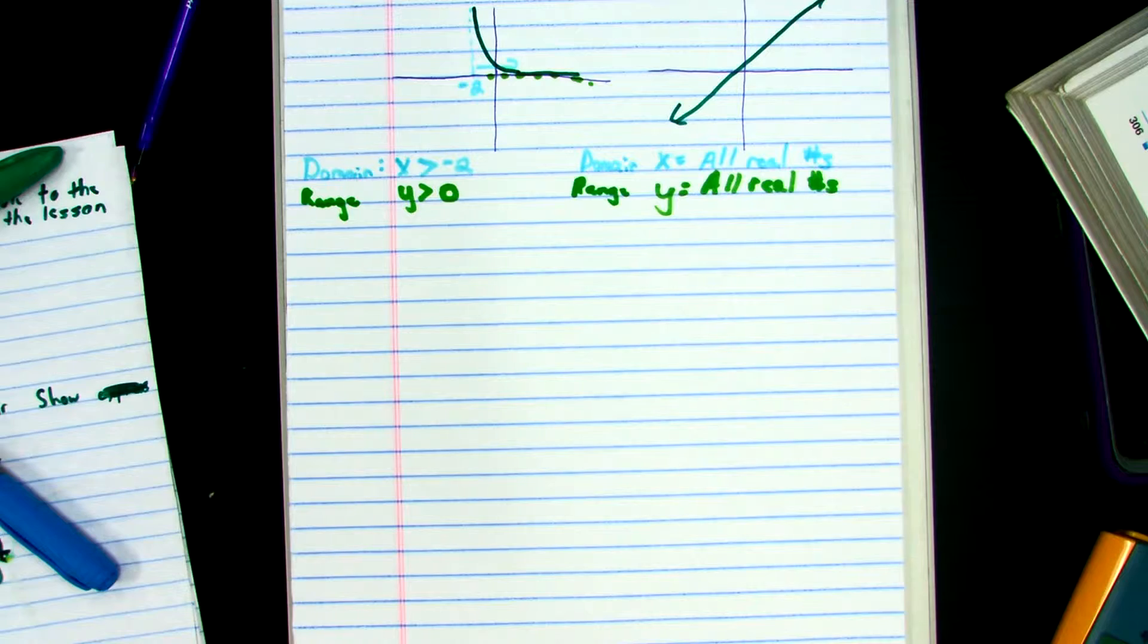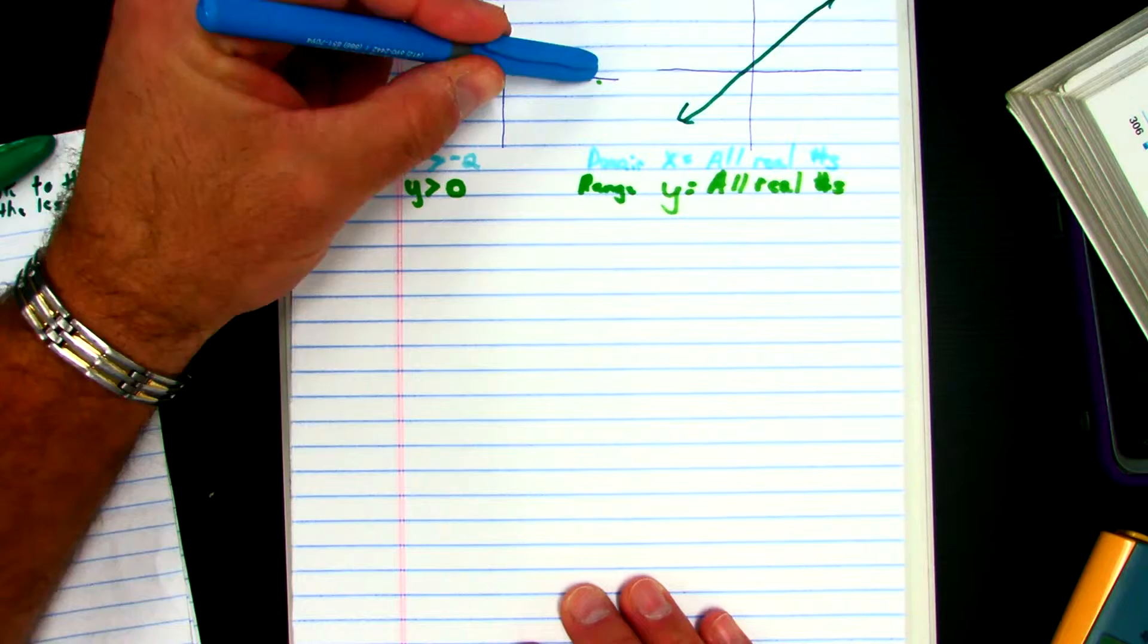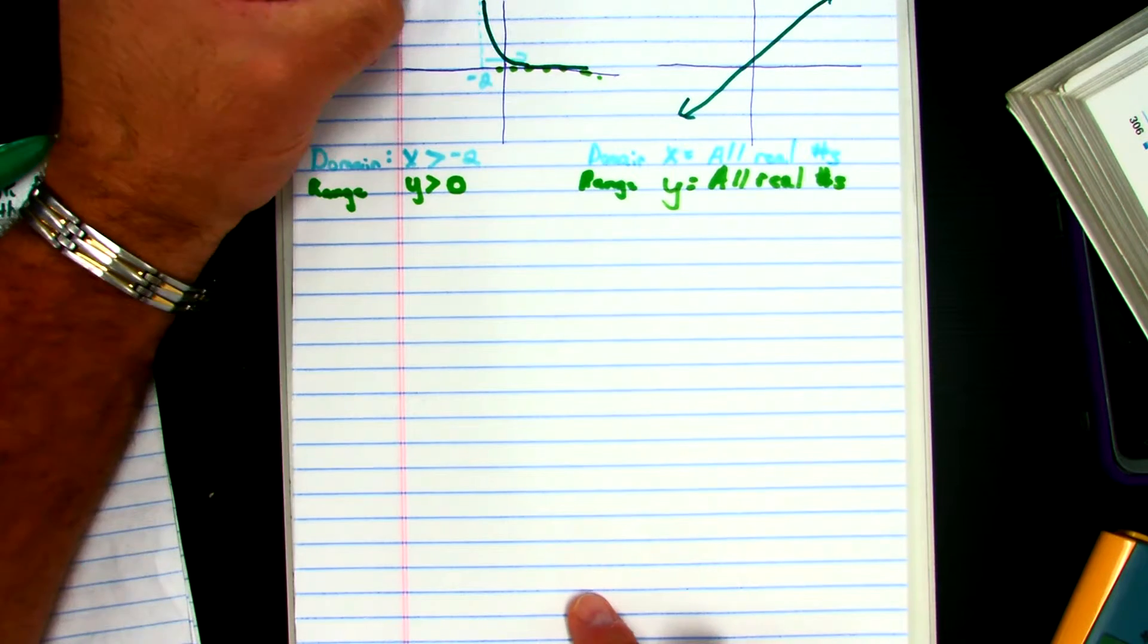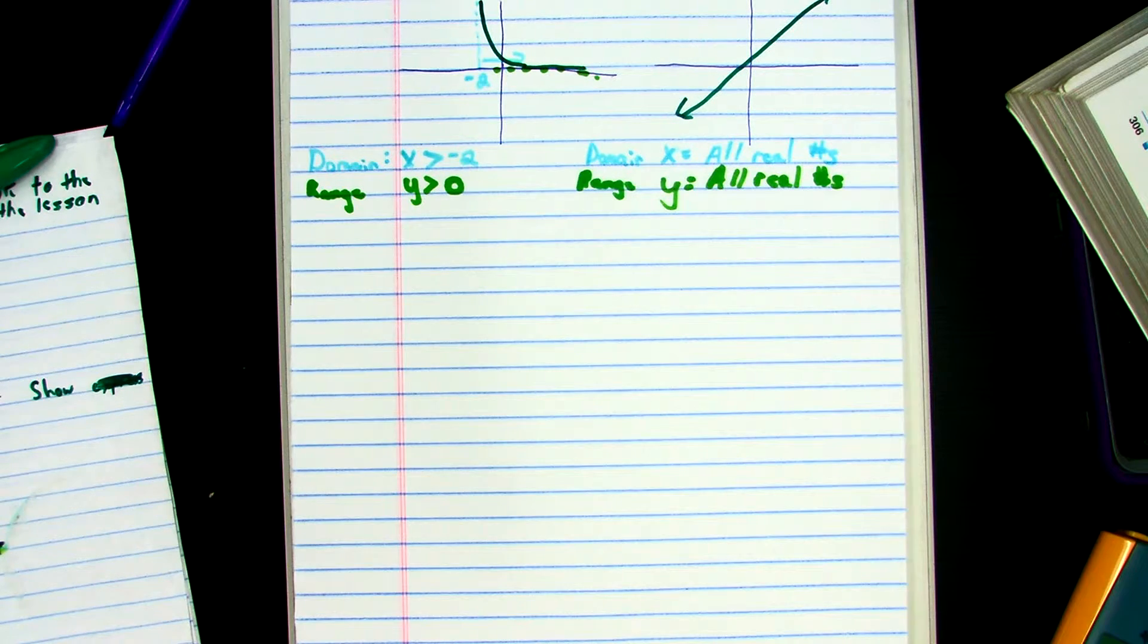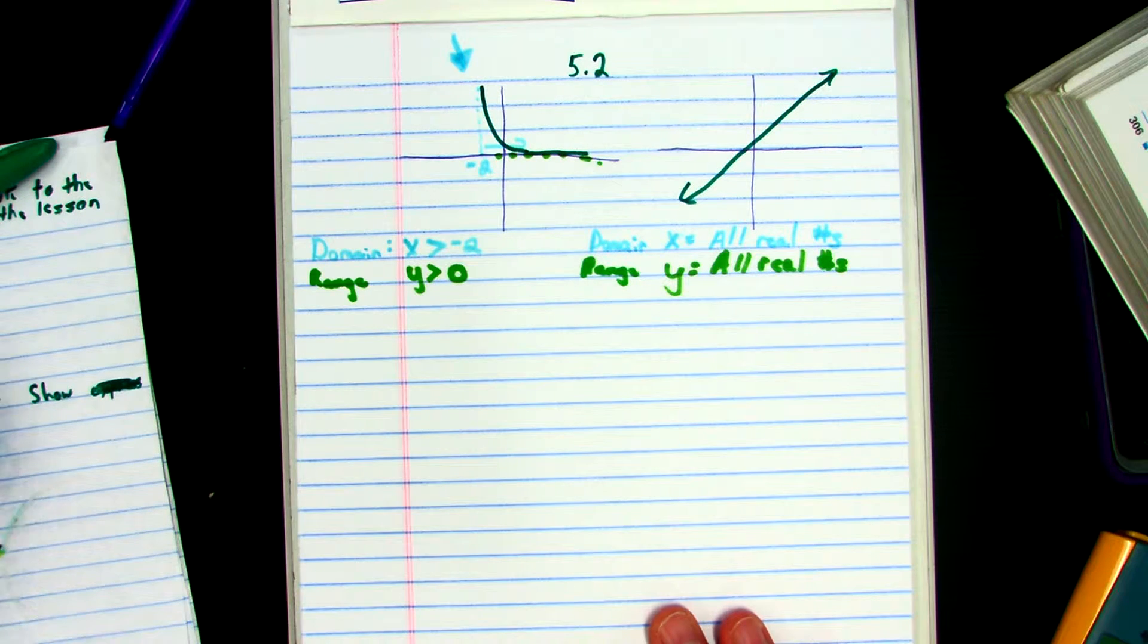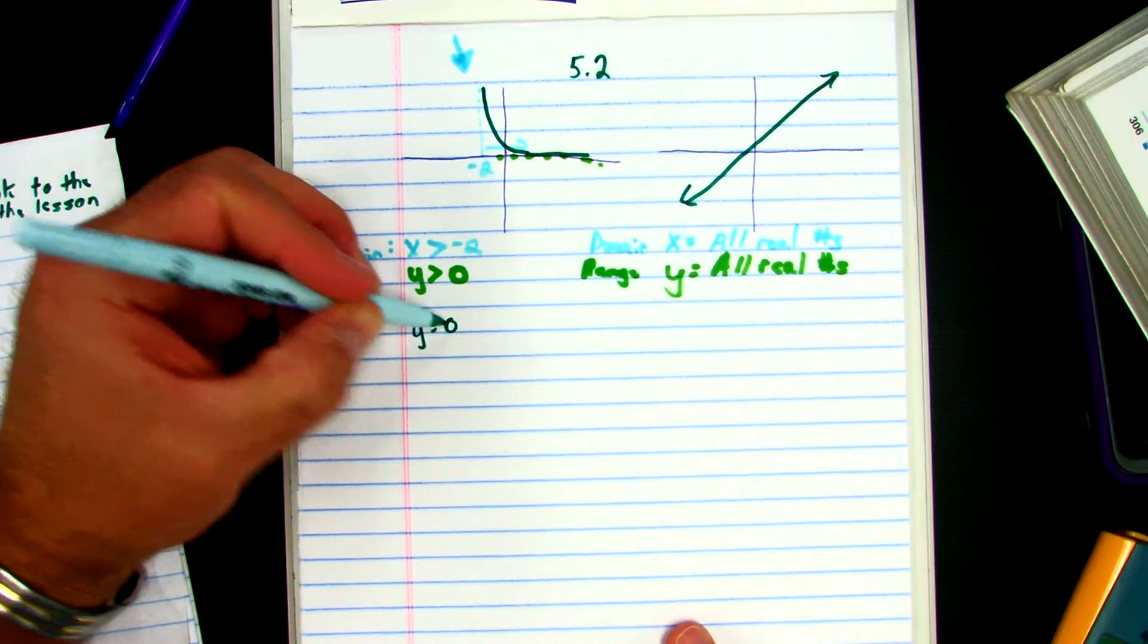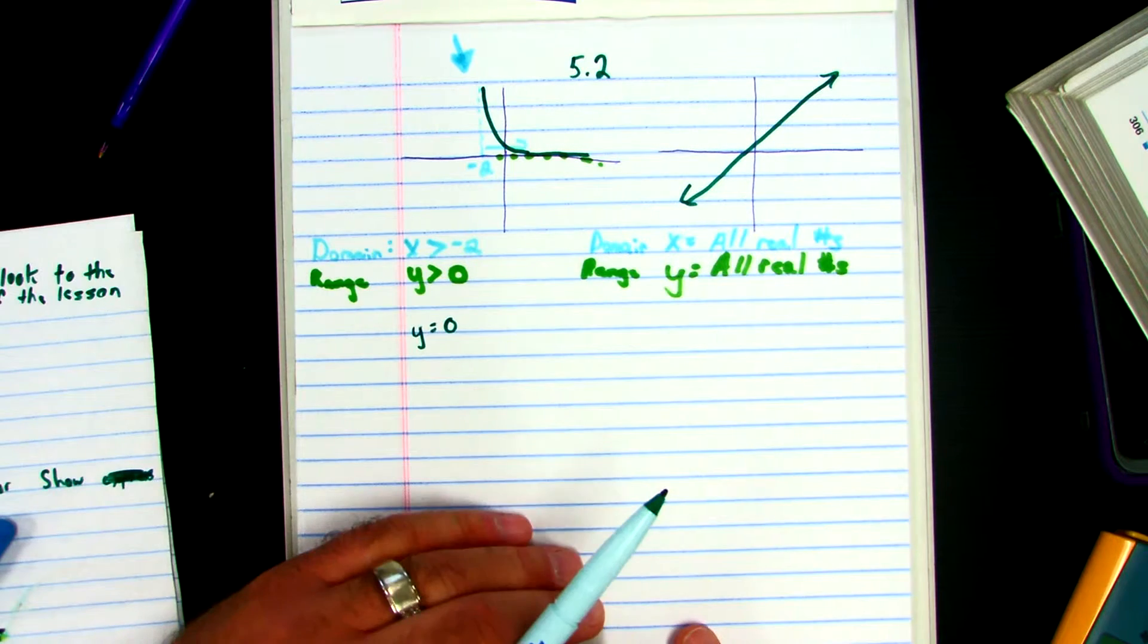Now one of the last words is the word asymptote. And an asymptote is the line that the curve will not touch. It'll get really close, but it'll never touch. So an asymptote only happens in exponential problems, and the asymptote would be Y equals 0 because no matter what, this line will get infinitely closer to 0, but it will never touch 0.